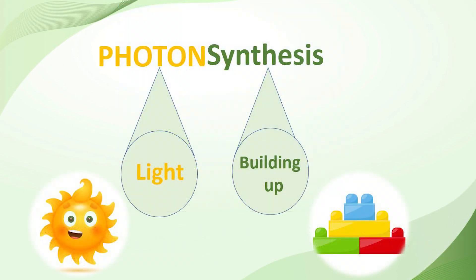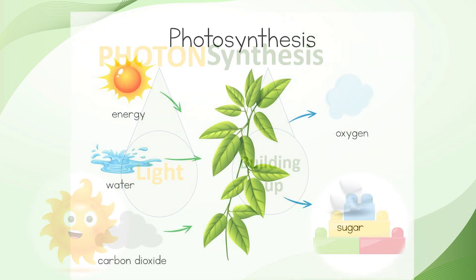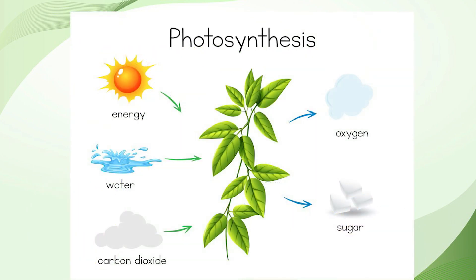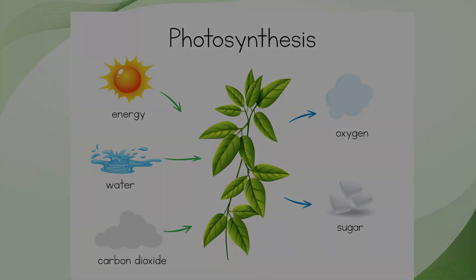The term photosynthesis is derived from two words: photon means light, and synthesis means building up. Using the sunlight and producing food is nothing but photosynthesis. The raw materials required for photosynthesis are carbon dioxide, water, sunlight, and chlorophyll.